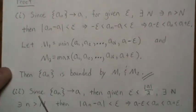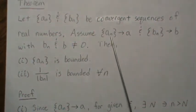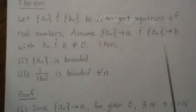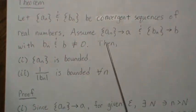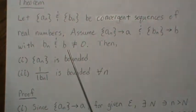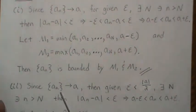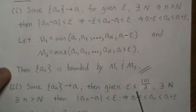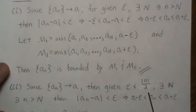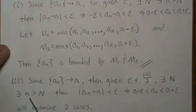Now for part two — I'm correcting myself here — we want Bn converges to B, so it's kind of a new problem where Bn converges to B and Bn and B are never zero. Actually, we'll set it up so An converges to A and An and A are never zero. Then given epsilon less than the absolute value of A over 2, there exists an N such that when n is greater than capital N, then this inequality is true.